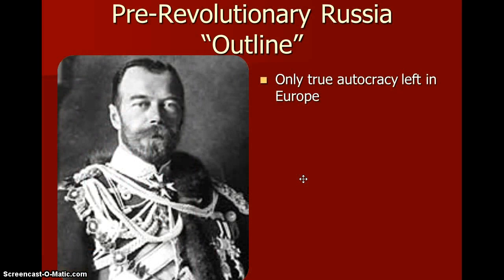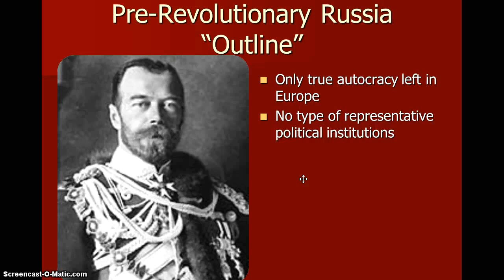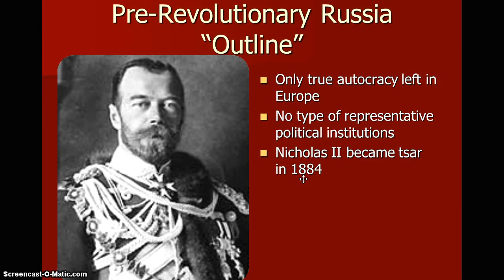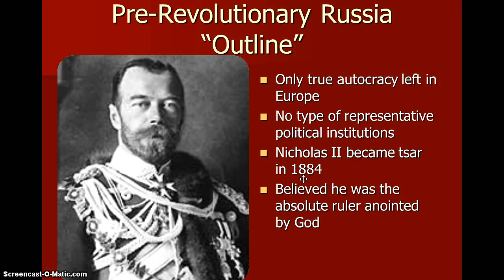Russia in the pre-revolution era was the only true autocracy left in Europe. That means there was no type of representative political institution, no type of representative of people in government. Nicholas II became Tsar — equivalent to dictator, leader, king — of Russia in 1884. He believed he was the absolute ruler anointed by God, which also reminds us of Nicholas IV, I believe, who was in France, who also believed in the divine right of kings and got his head chopped off. So we know where this is leading to.